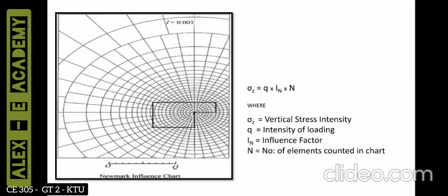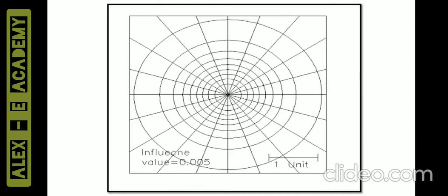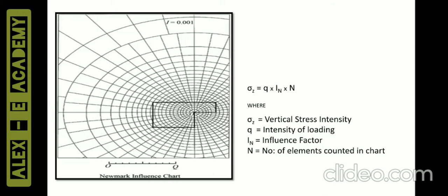The intensity of loading q is given for that particular load area. Each chart is drawn for a particular influence factor value — in this case I_n = 0.001, and in the previous chart 0.005 — so the influence value differs for different charts. You are not required to understand how to draw this chart, but you need to know the theory behind the computation. The chart is developed based on the equation used for circular foundation analysis.